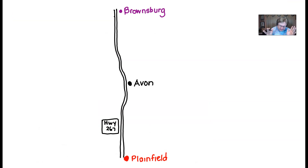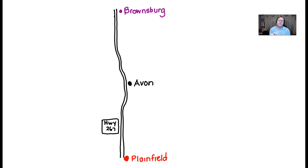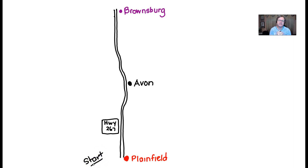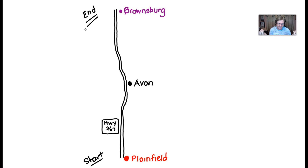Picture a road called Highway 267 with three towns situated along it: Plainfield to the south, Avon right in the middle, and Brownsburg up north. Think about this theorem as saying: if you are driving from Plainfield — your starting place — and you continuously stay on Highway 267 all the way to Brownsburg, what must happen? You have to pass through Avon. That's really what the Intermediate Value Theorem is saying.